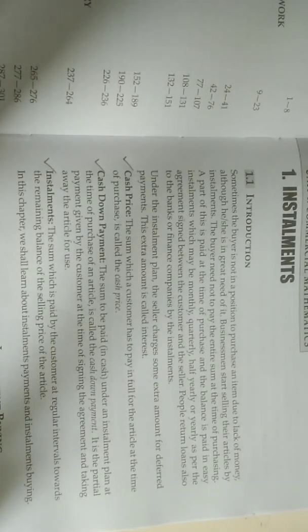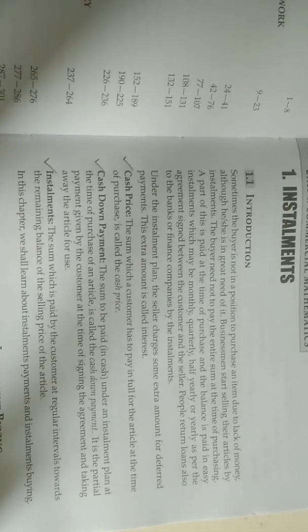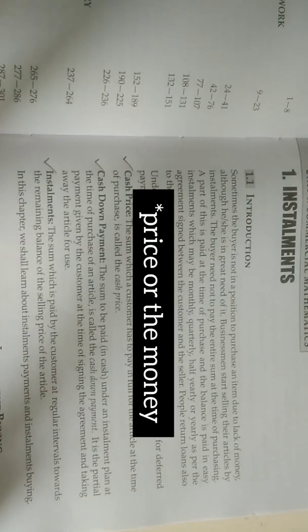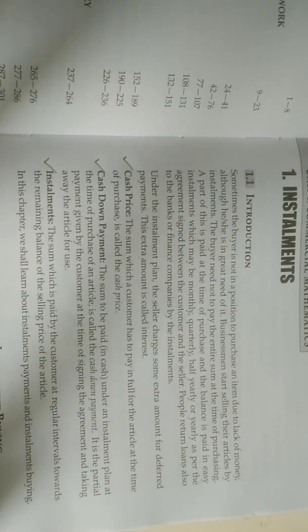Now, over here we have three terms which are very important. The first one, as you can see, is cash price. So let's all read together what cash price means: 'The sum which a customer has to pay in full for the article at the time of purchase is called the cash price.' What does it mean? The initial amount — the initial price of the money which you have to pay in the beginning — is the cash price.